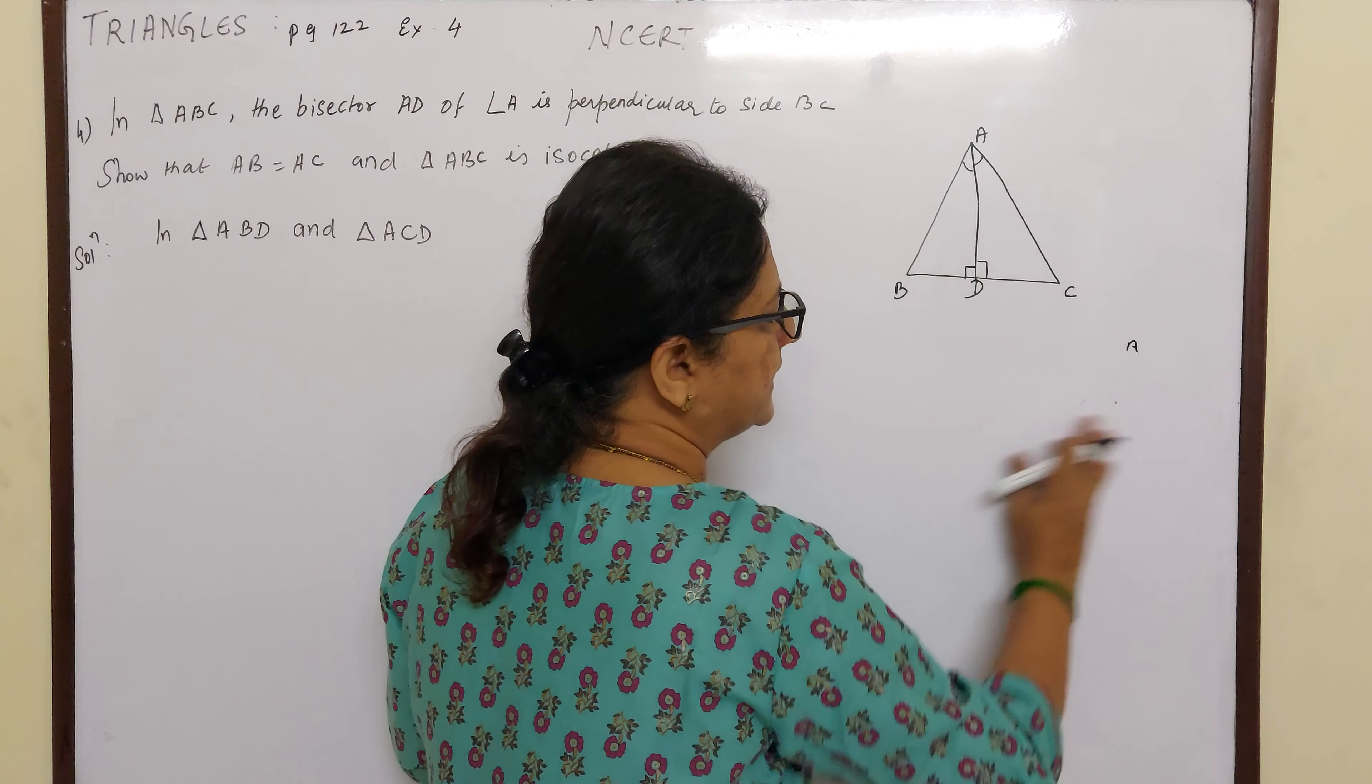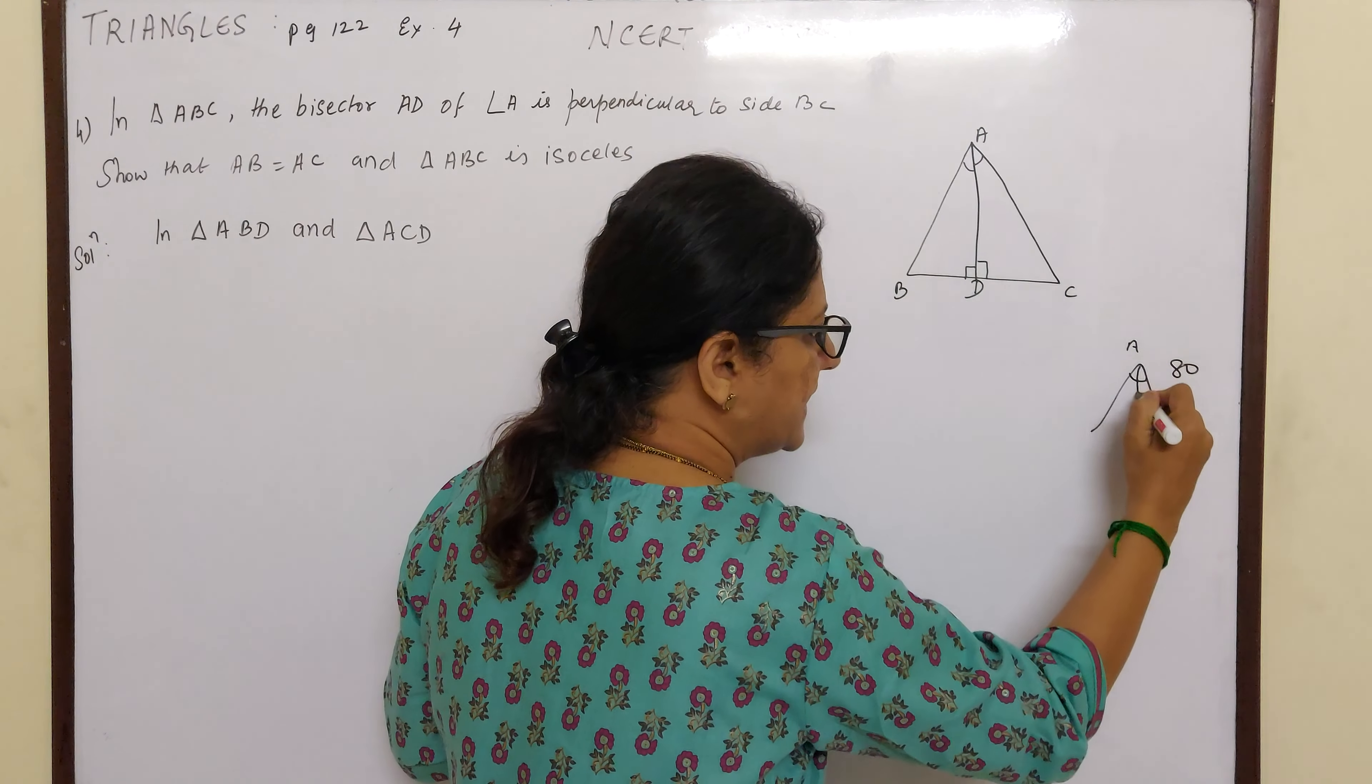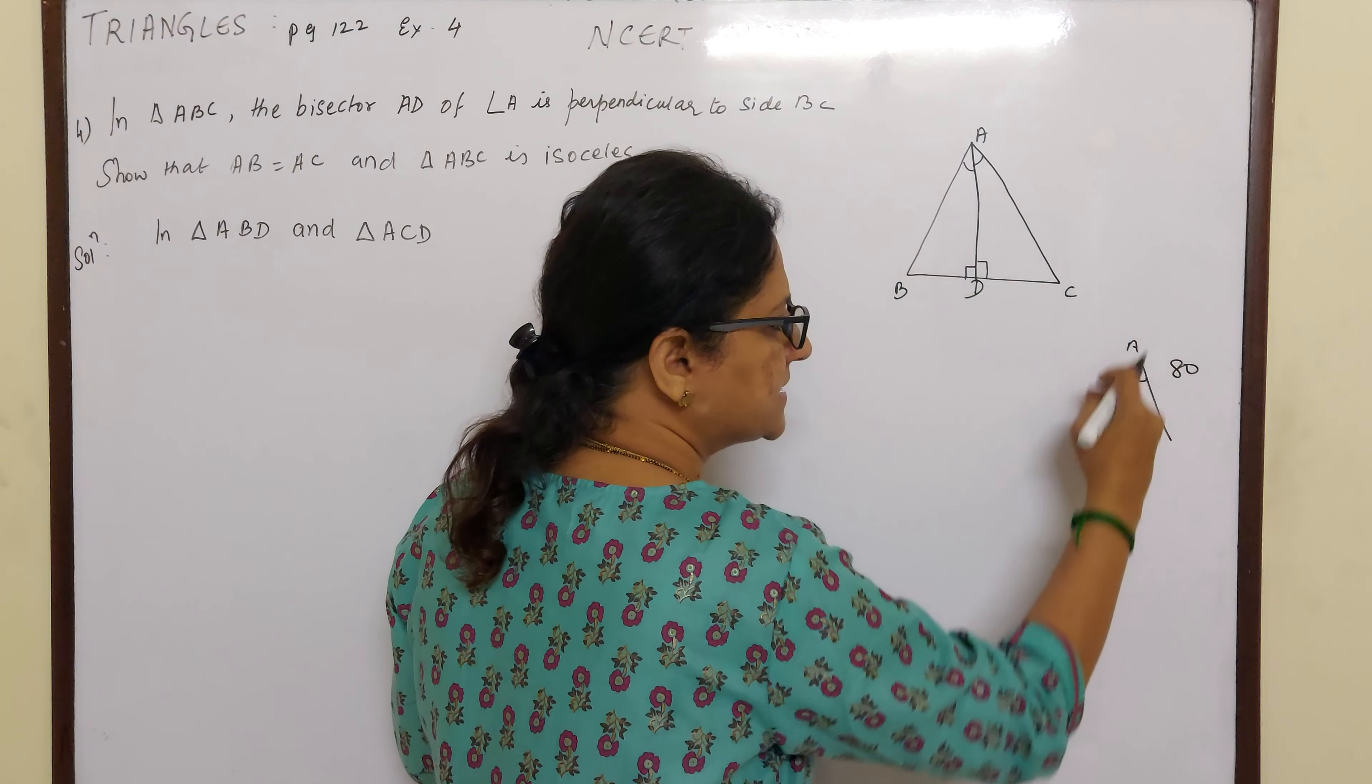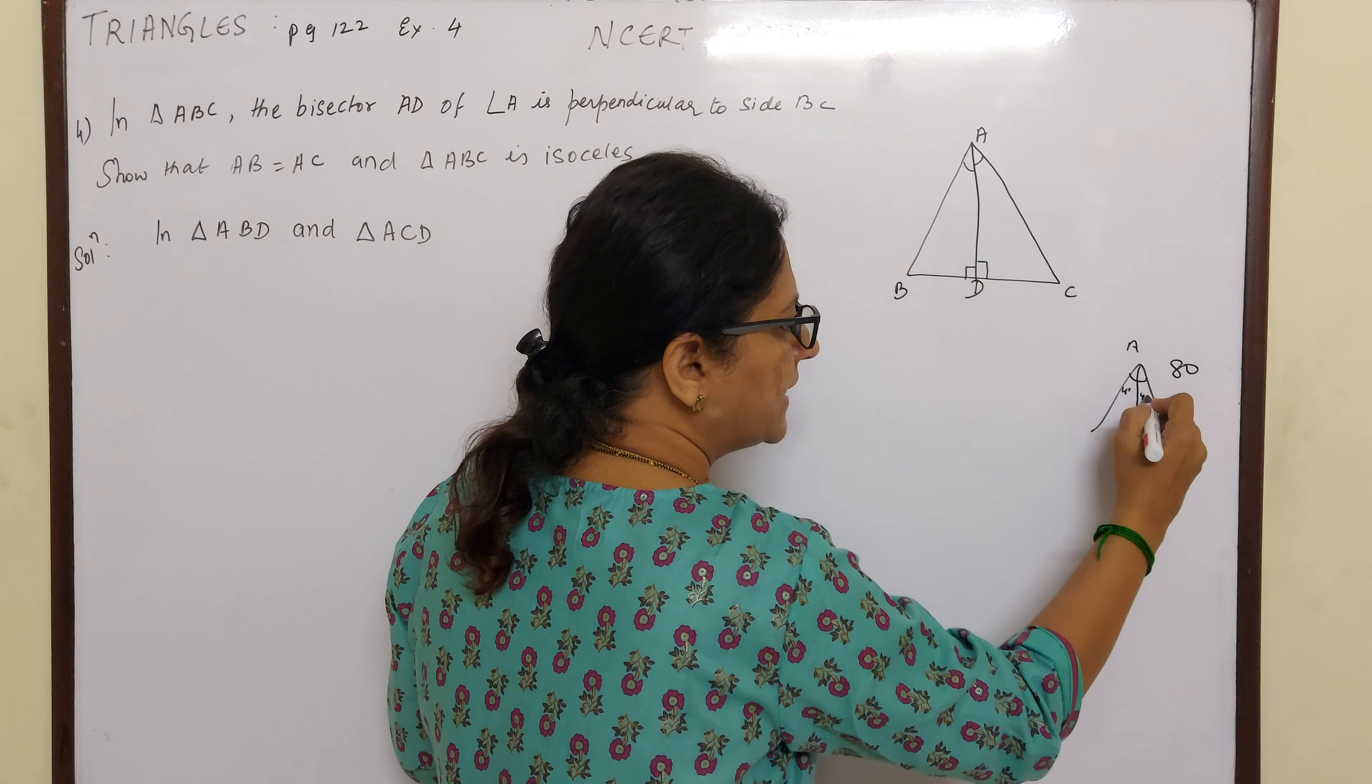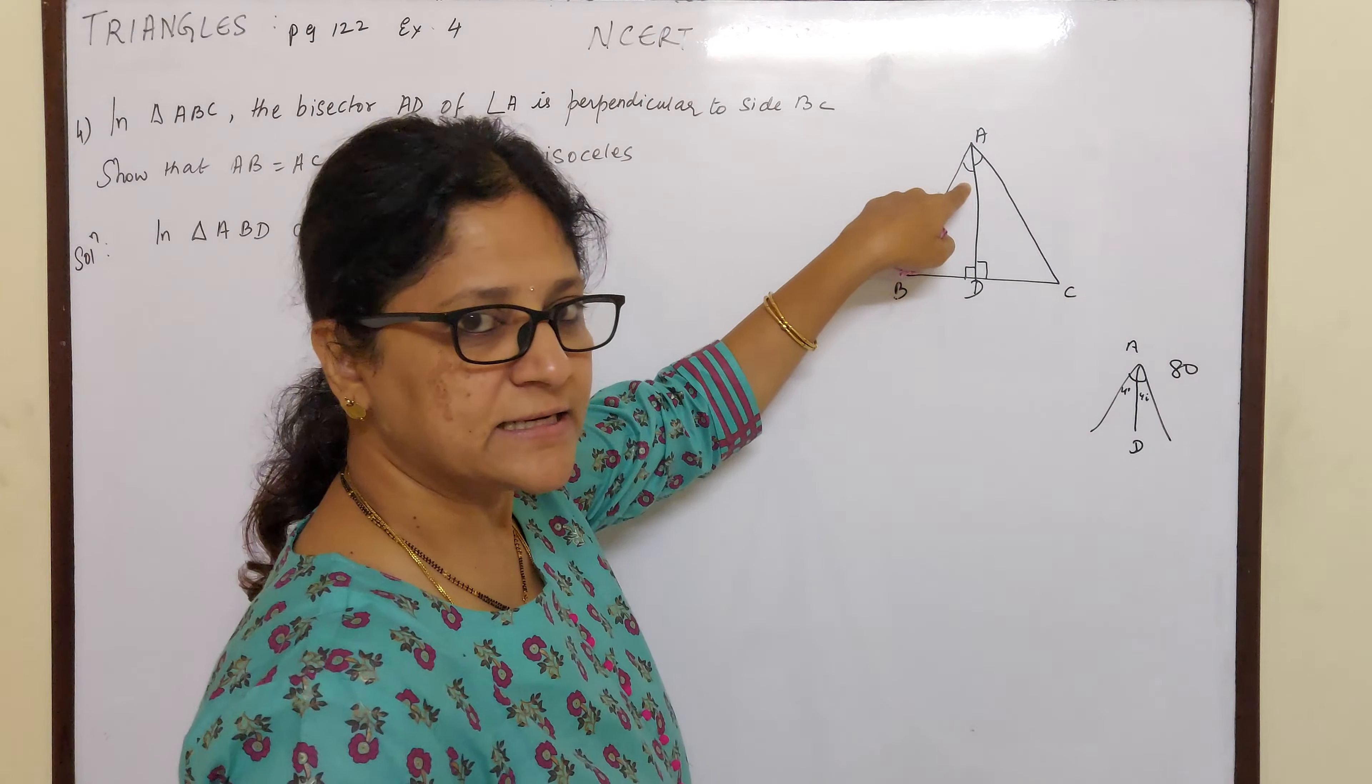If suppose the angle A was 80 degrees, suppose this is 80 degrees. So what happens when AD bisects angle A? This becomes 40 and this becomes 40. That means that is why this same pattern sign is shown.